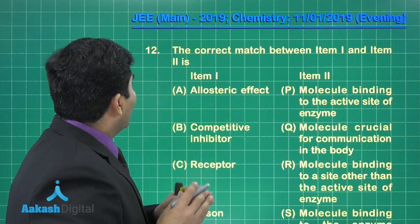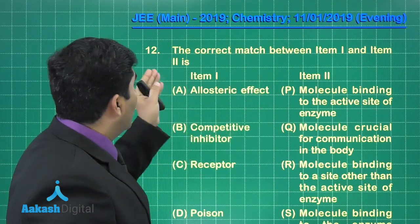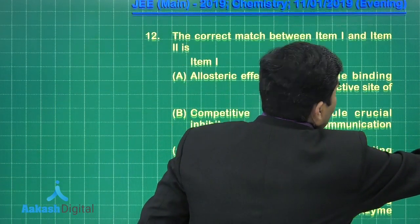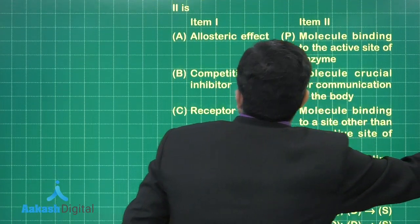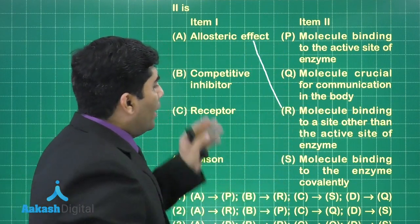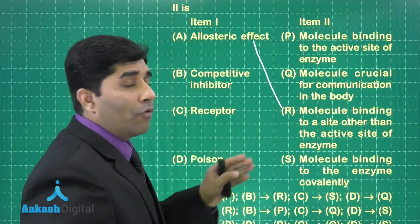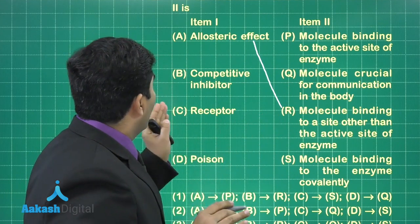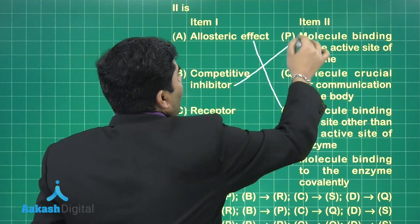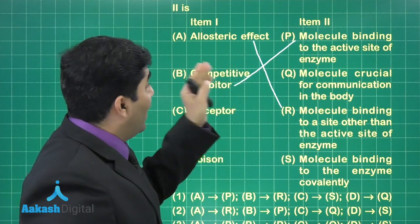The next question is the correct match between item one and item two. Now first we have to see what are the items given here. Molecule binding to the site other than the active site of that enzyme. Competitive inhibitor, it means the molecule binding to the active site of the enzyme.